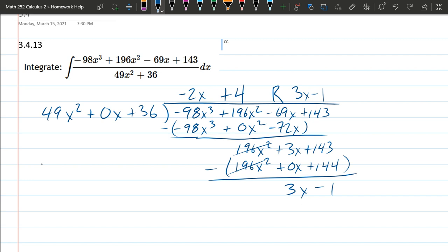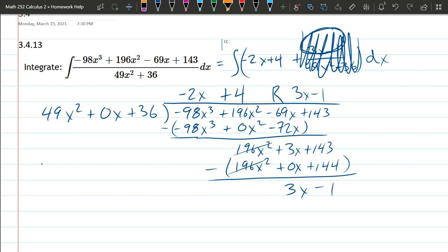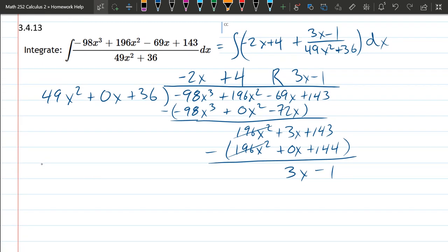So what that means, we can rewrite this. Our whole number part goes in with no denominator, so that's negative 2x plus 4. Our remainder comes in over the original denominator, 49x squared plus 36. That's where your remainder goes. When it does divide in evenly, there would be a 0 remainder up top and this whole entire thing would disappear. Unfortunately our remainder is not 0, so we're going to have a little more work to do.